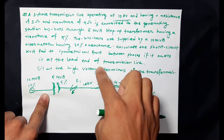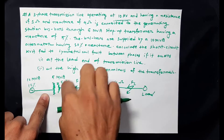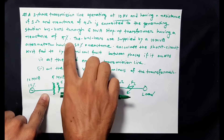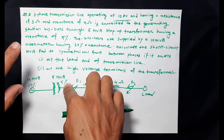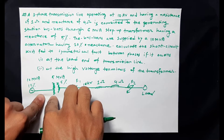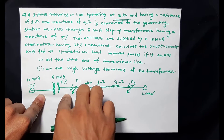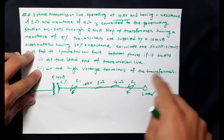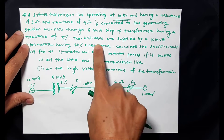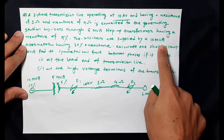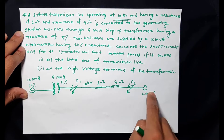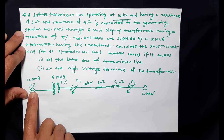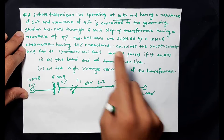The transformer has a resistance of 5 ohm and reactance of 5 ohm — that means the low voltage side and high voltage side step up. The bus bars are supplied by a 10 MVA alternator.